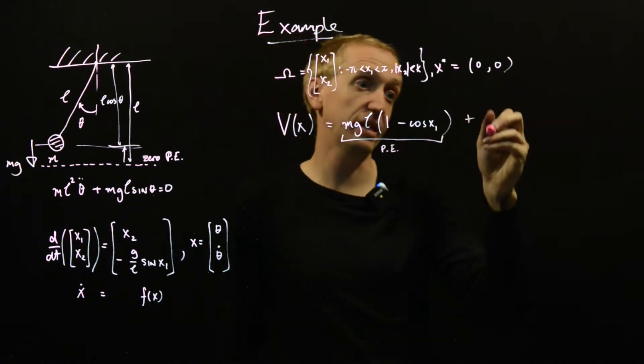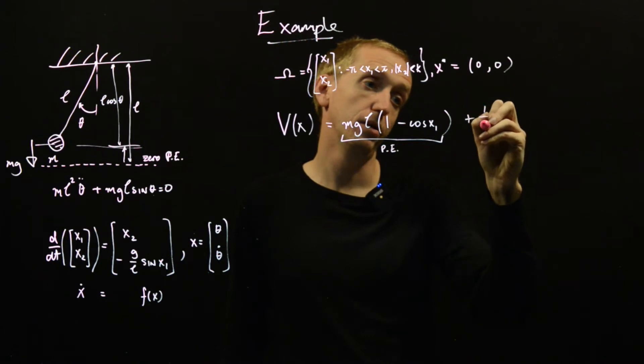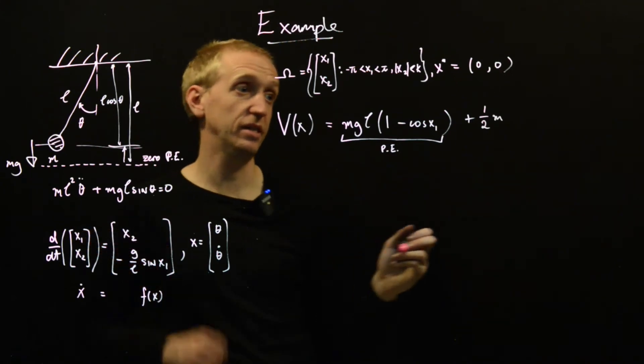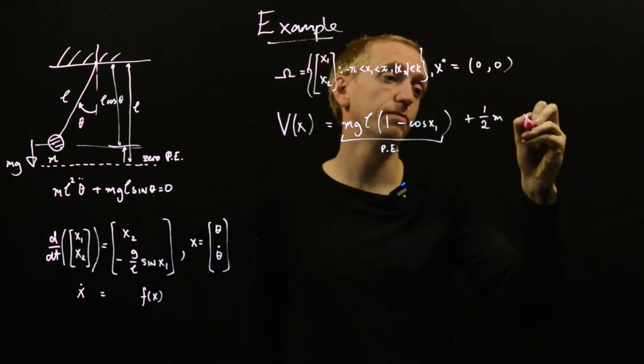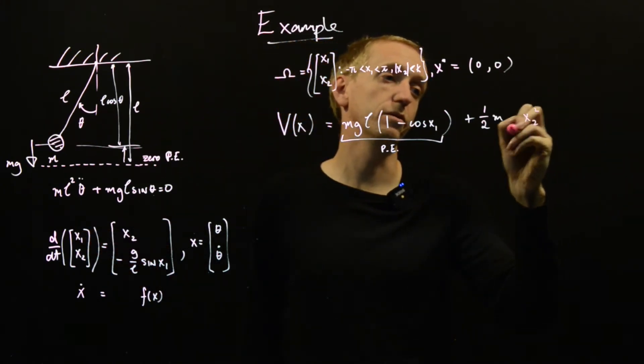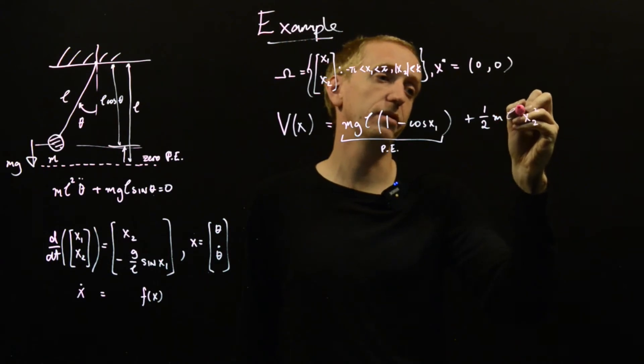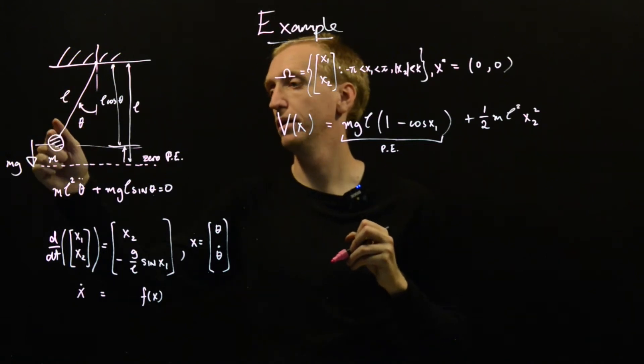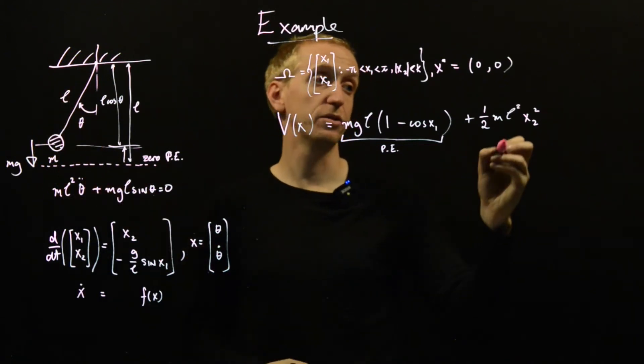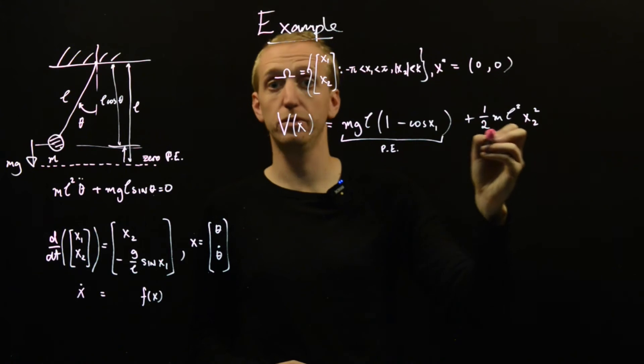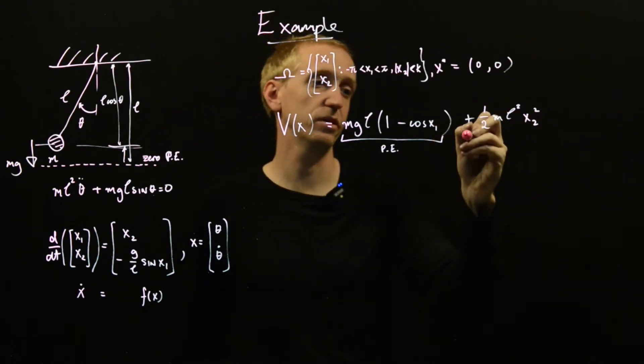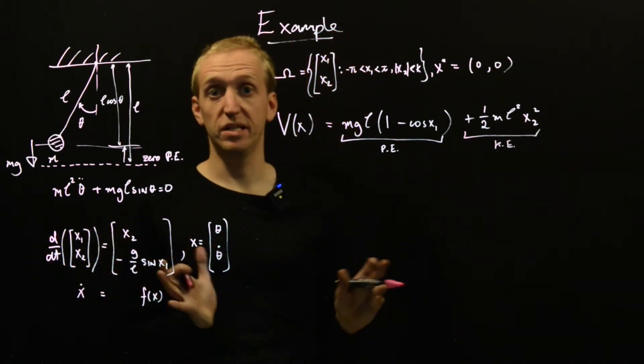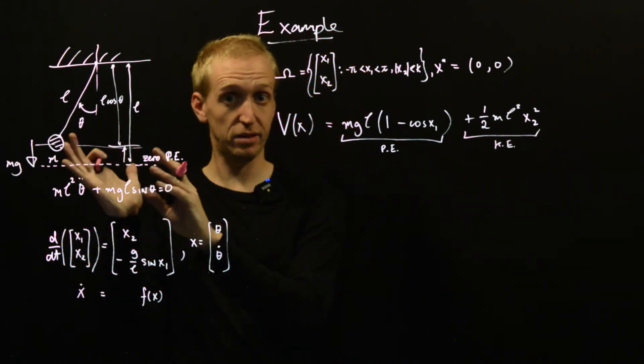And to this we add the kinetic energy, which is a half M multiplied by the velocity. So the angular velocity is x2, so we need an x2 squared and then we need an L squared. We need to scale it. So the velocity is L times x2, so the velocity squared is L squared x2 squared. So the kinetic energy is this. This is our energy function for this system here.